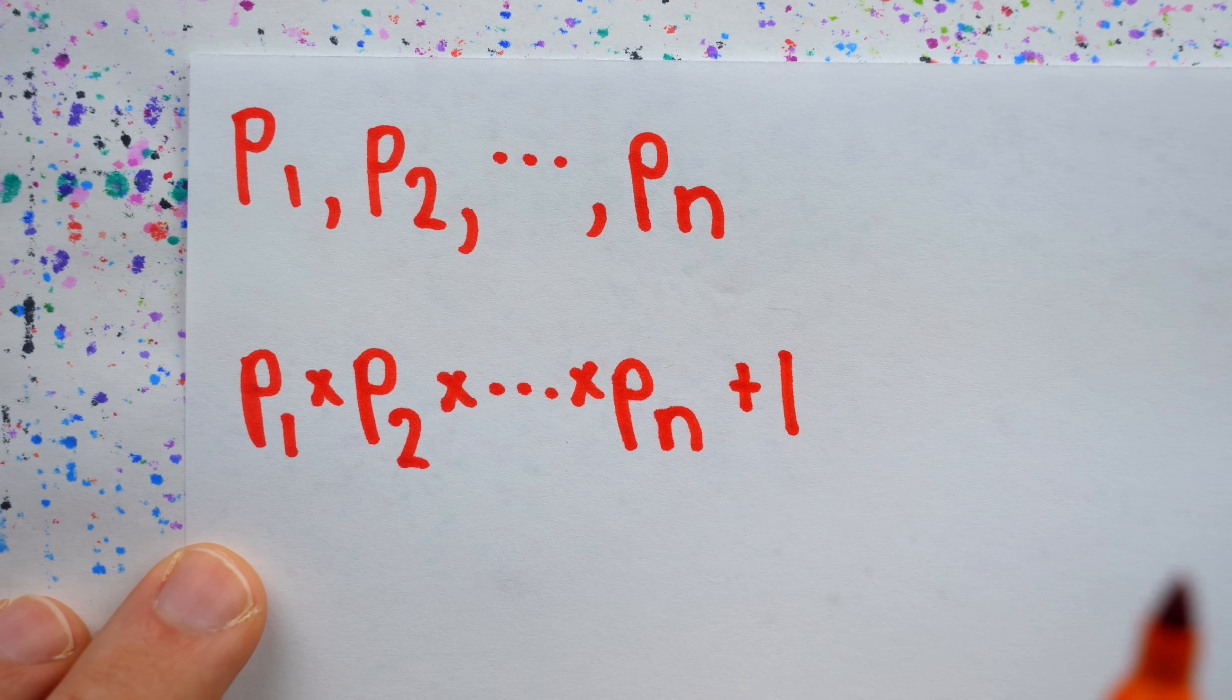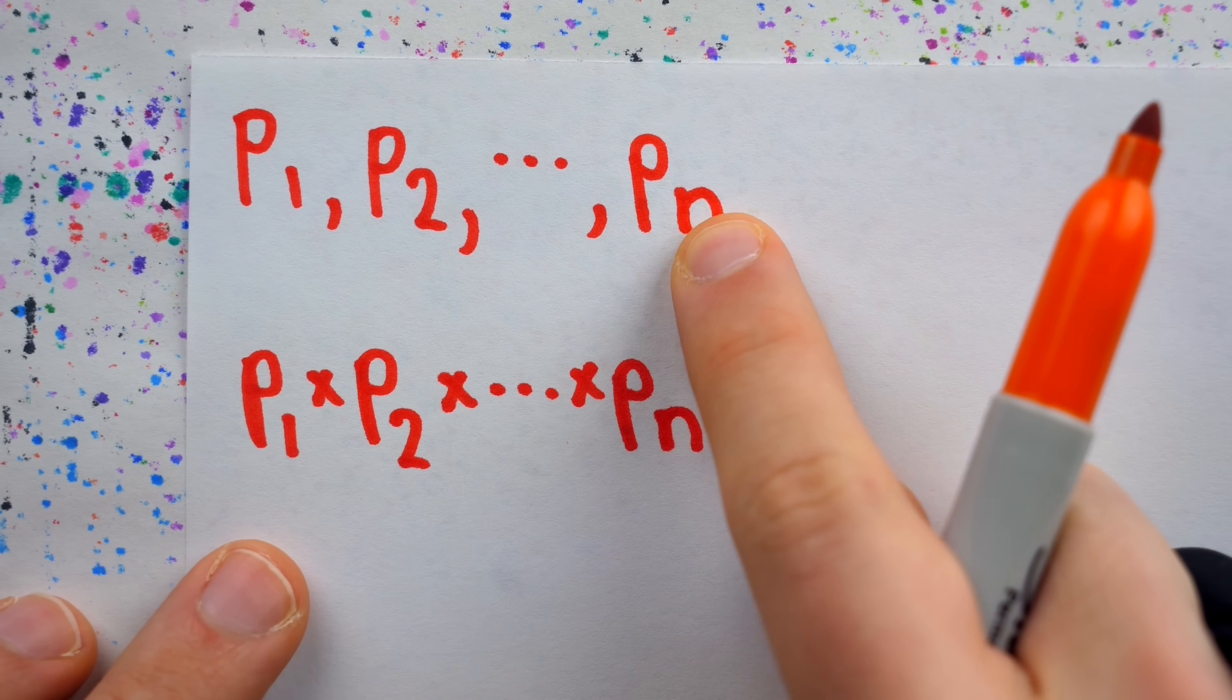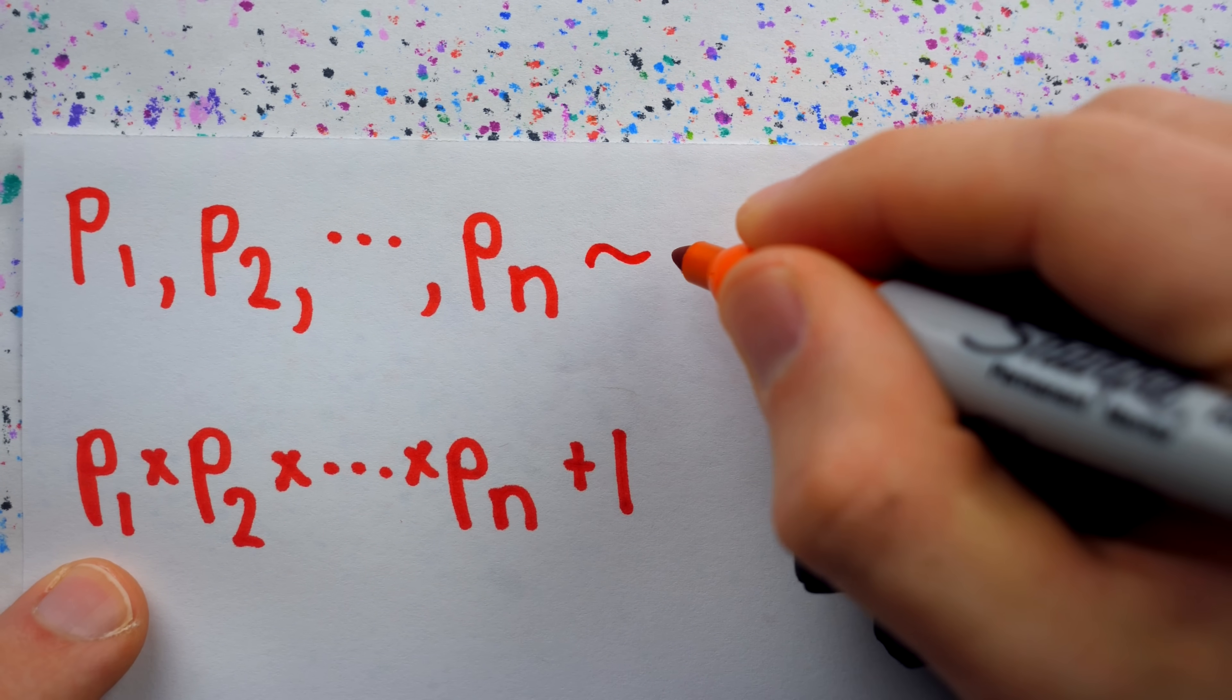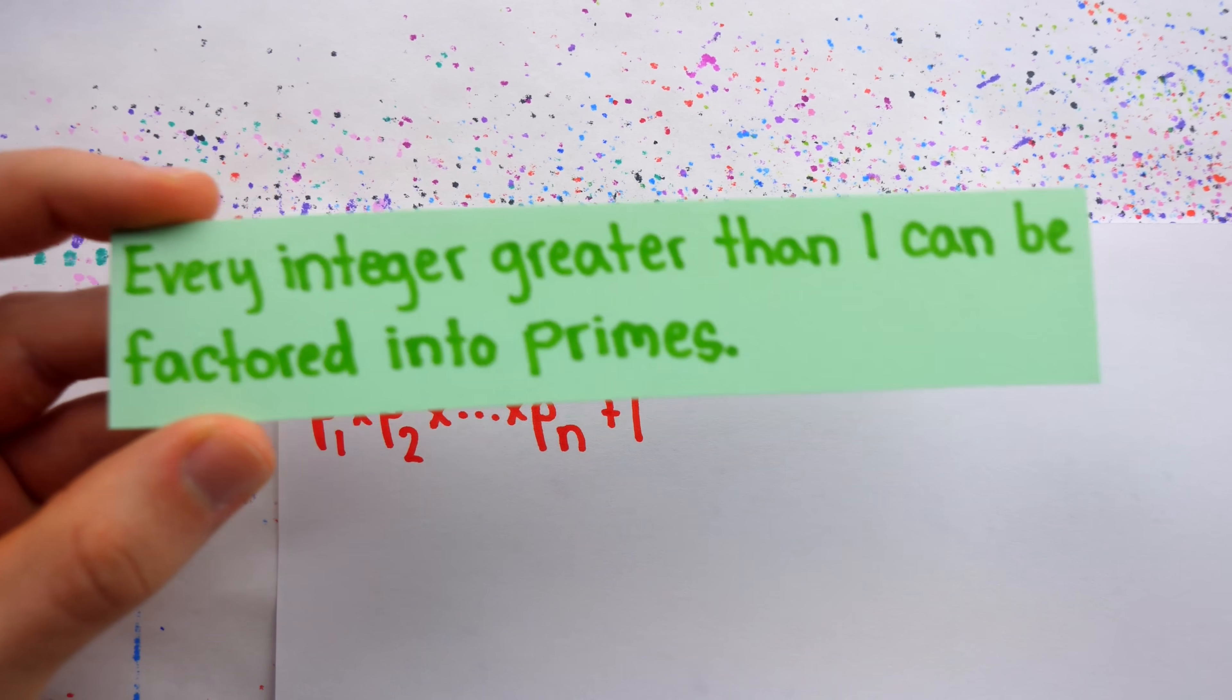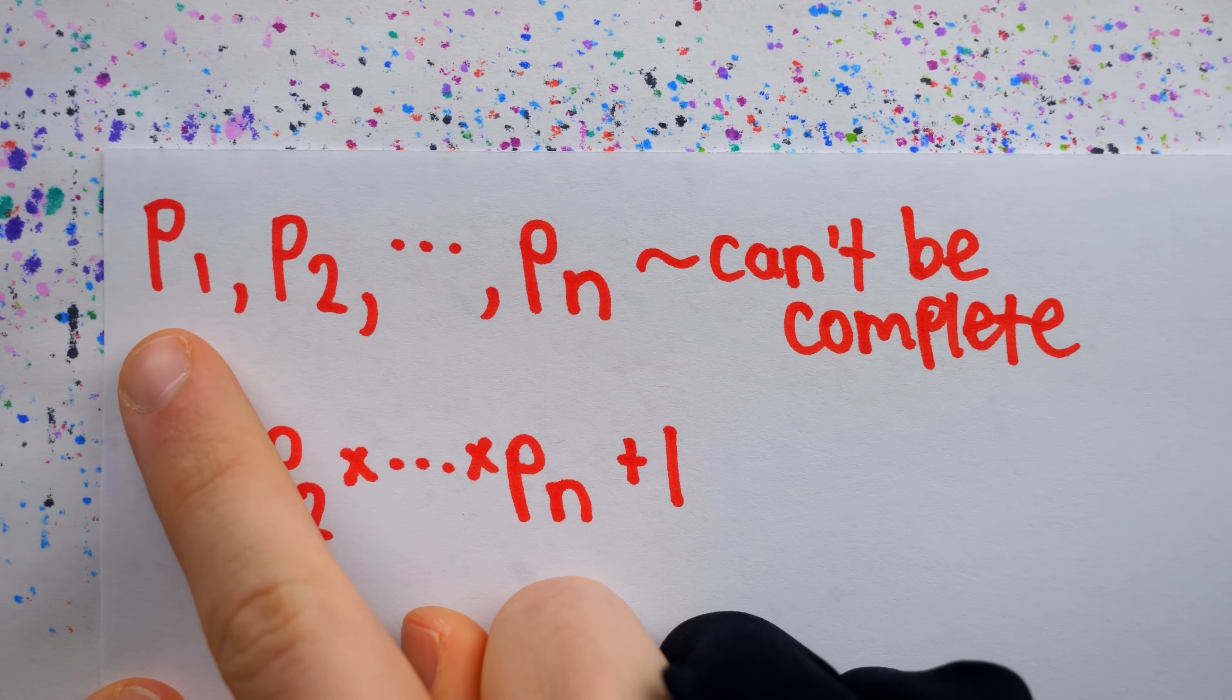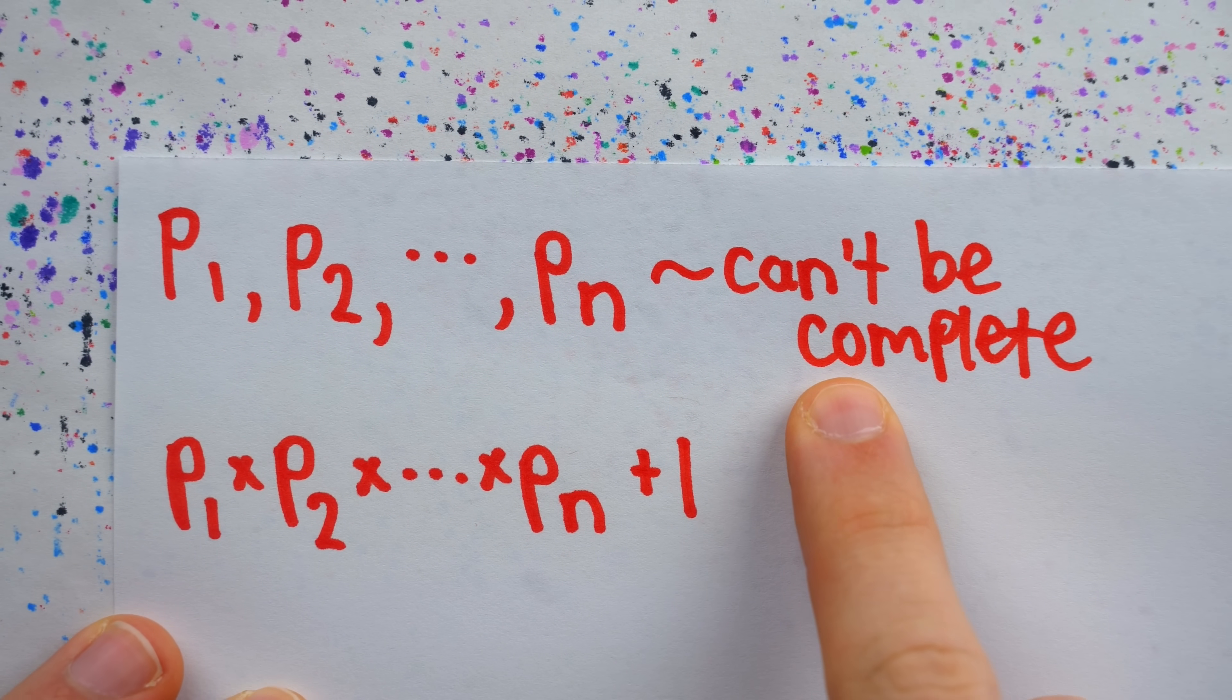So the classic proof uses prime factorizations to establish this finite list of primes can't be complete.